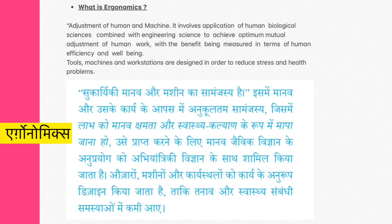The adjustment of human and machine is known as ergonomics. It involves the application of human biological sciences combined with engineering science to achieve optimum mutual adjustment of human work, with benefits being measured in terms of human efficiency and well-being. It also talks about how tools, machines, and workstations are designed so that you do not take stress and don't have any health problems.